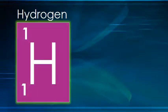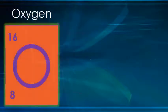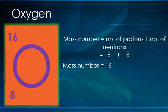For example, the mass number for hydrogen is 1 and the atomic number for hydrogen is also 1, which means it has no neutron. In an oxygen atom, there are 8 protons and 8 neutrons. By adding protons and neutrons, the mass number will be 16.